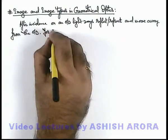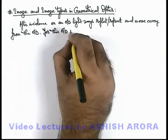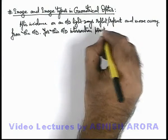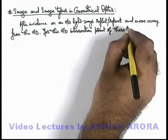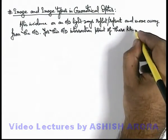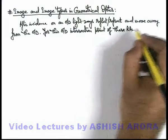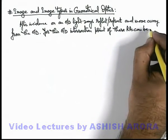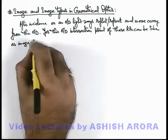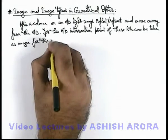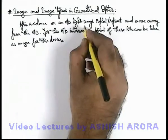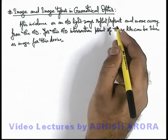For this optical device, the intersection point of the reflected or refracted rays — RRs — can be taken as the image for this device. In other words, the image is the point where all reflected or refracted rays appear to meet.